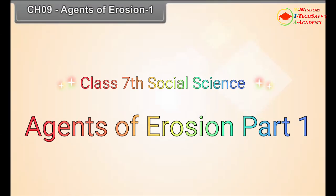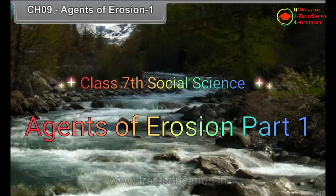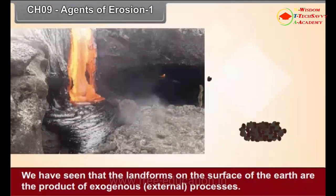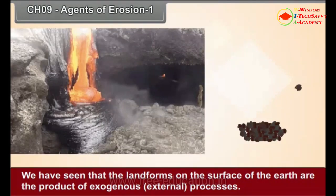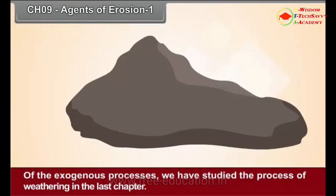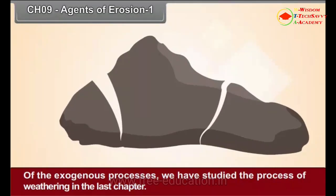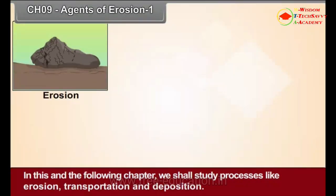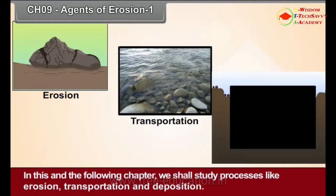Chapter 9: Agents of Erosion, Part 1. We have seen that the landforms on the surface of the earth are the products of exogenous external processes. Of the exogenous processes, we have studied the process of weathering in the last chapter. In this and the following chapter, we shall study processes like erosion, transportation and deposition.